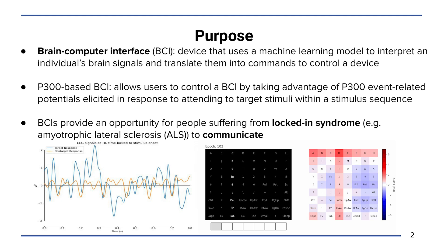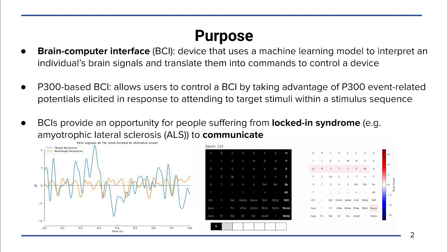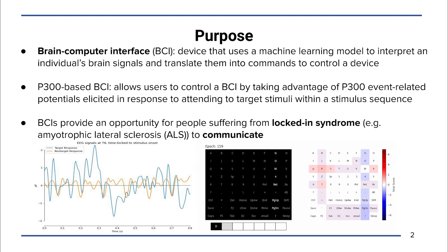The illumination of a target character elicits a P300 event-related potential, otherwise known as ERP. The BCI analyzes the brain signals' response to each stimulus with a machine learning classifier to detect ERPs, and discerns the user's intent by matching the detected ERPs to the character presentation pattern.